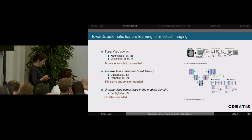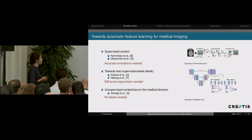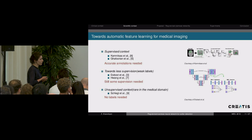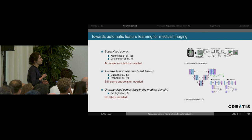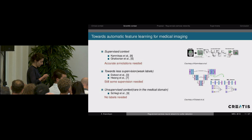We're going to try to learn features in an automatic way. We have seen great examples of supervised models based on deep learning, especially for tumor segmentation, but these need a lot of labeled data. We can move towards weak supervision, but we will still need some level of supervision. In the medical domain, there are not many works dedicated to the unsupervised context, and this is what we want to do.